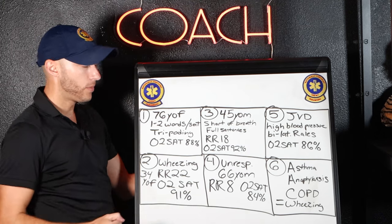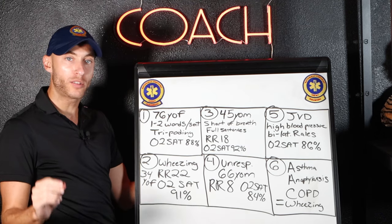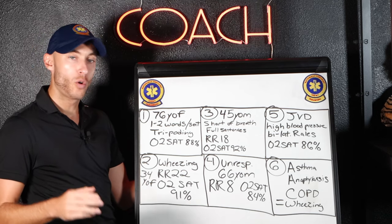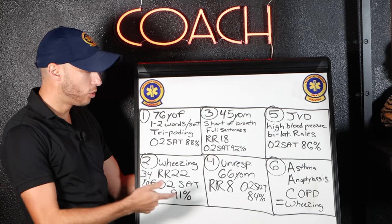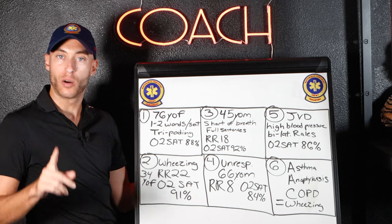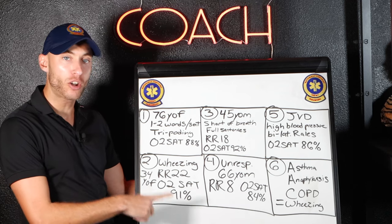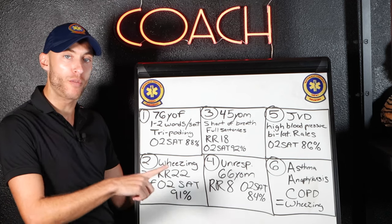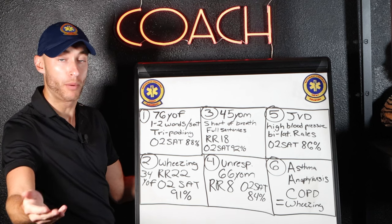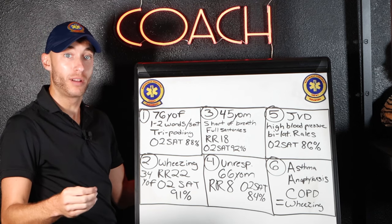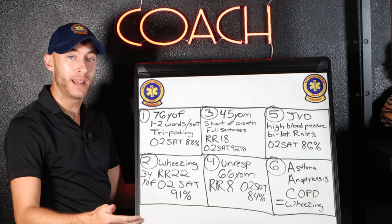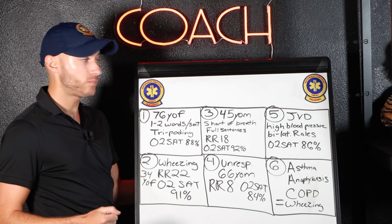Number four: unresponsive patient, 66 years old, respiratory rate of 8, O2 sat of 84%. Is it an oxygen problem or a ventilation problem? It's actually both. But if they need to be ventilated and they can't protect their own airway, this is going to be your BVM.